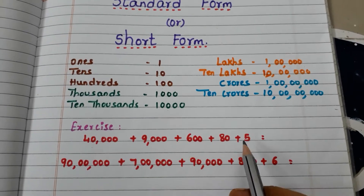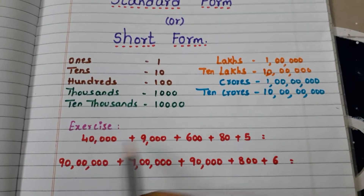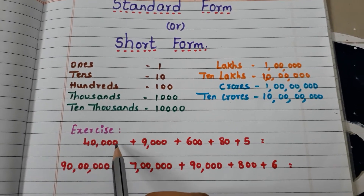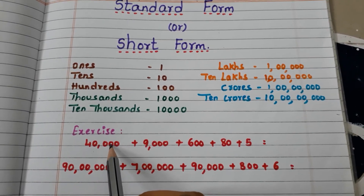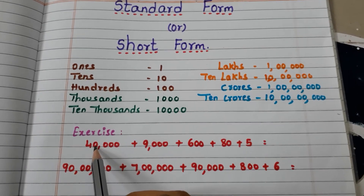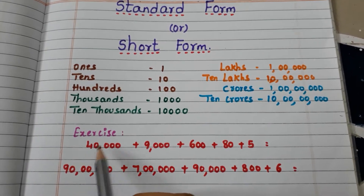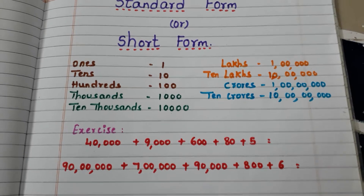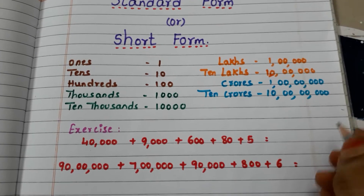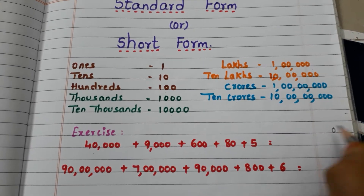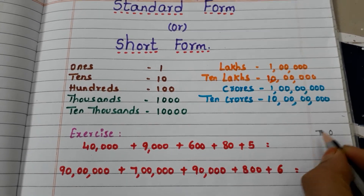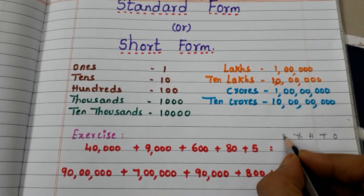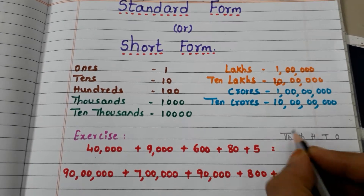Here we have examples. Check for the highest number of zeros — one, two, three, four. Four zeros are there, so we have the number till ten thousands. Write the places here: ones, tens, hundreds, thousands, ten thousands.